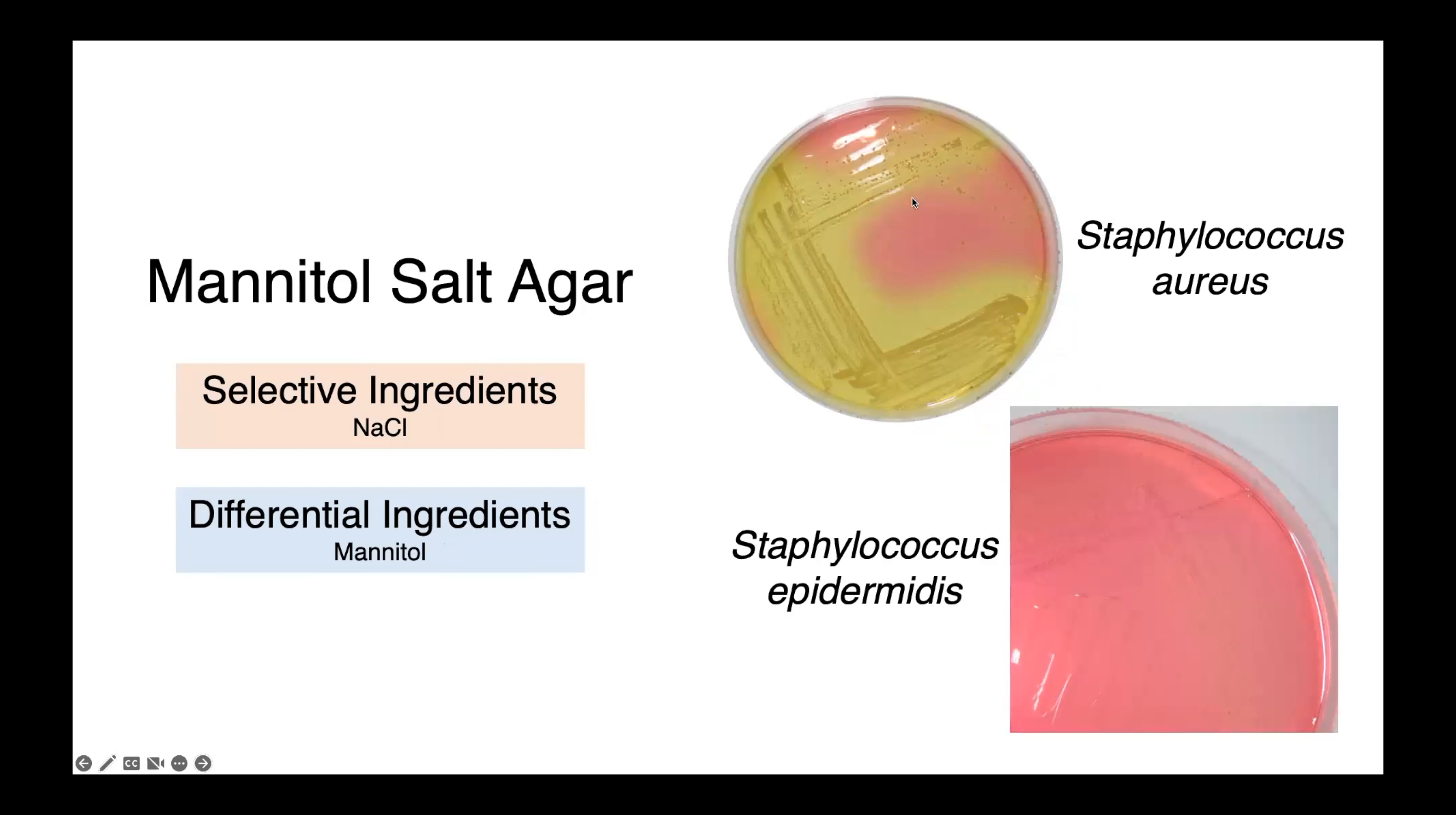On the top, you can see Staphylococcus aureus producing these nice bright yellow colonies. And on the bottom, we have non-mannitol fermenting Staphylococcus epidermidis.